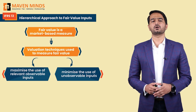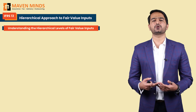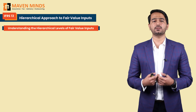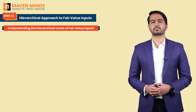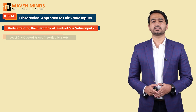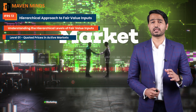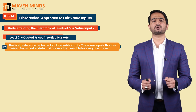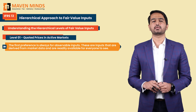Let's dive deeper into the hierarchical approach that IFRS 13 introduces for determining fair value. It explains the level of input you should use when calculating fair value. There are three levels to discuss. Level one is the quoted price in active markets — the first and most reliable level. The first preference is always for observable inputs, which are derived from market data.